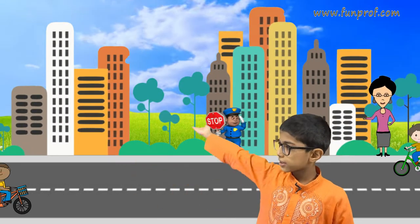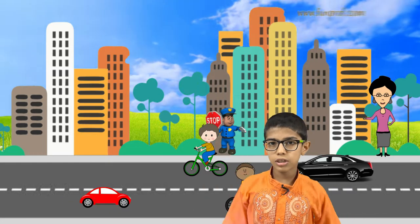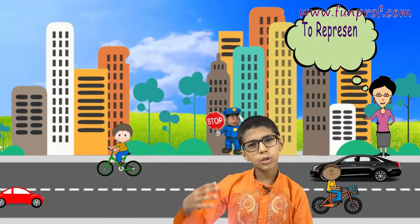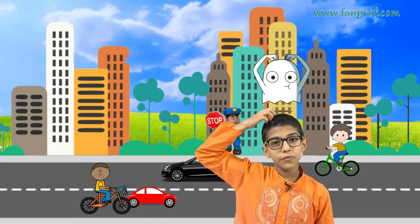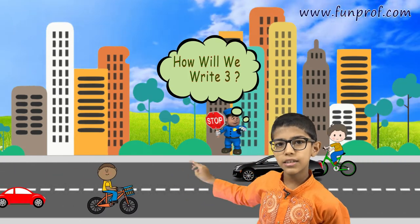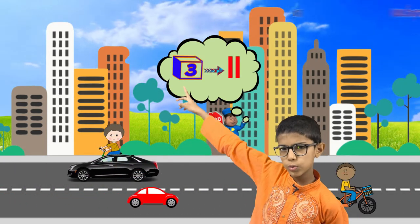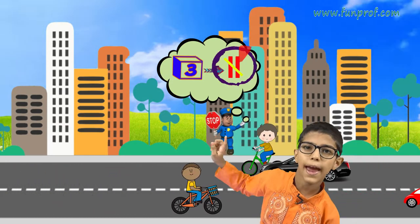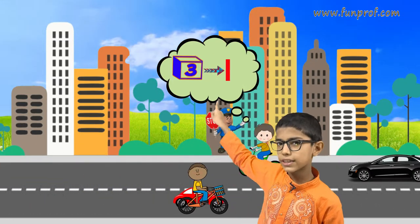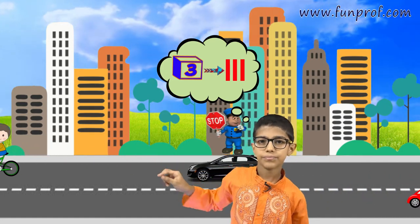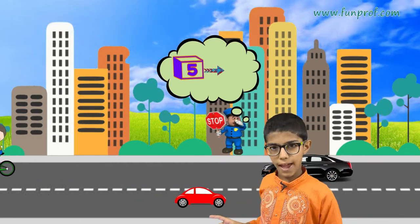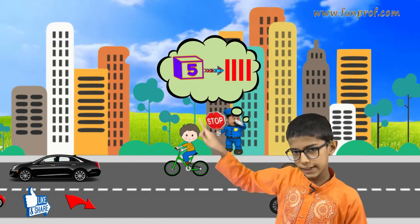I see many bicycles and scooters going here and there. I counted them, but my mother said to represent them in tally form and I am confused — can you help me? How will we write 3? We write it as 1, 2, 3 — it does not mean that the last number will have a cut. We write 3 as just 1, 2, and 3 straight lines. Now for 5: 1, 2, 3, 4 and then a cut.